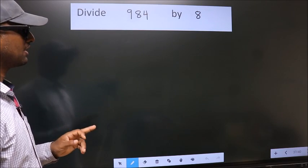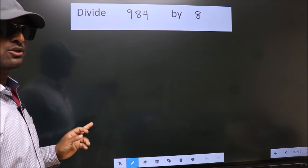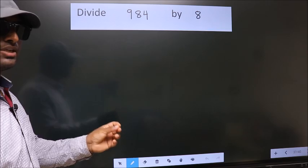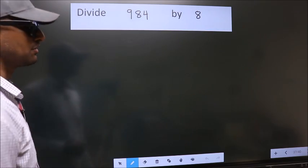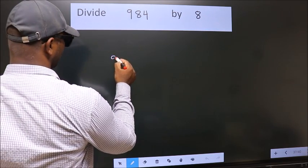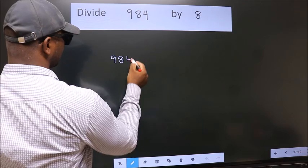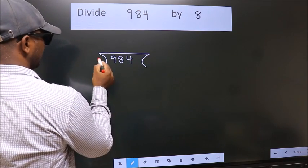Divide 984 by 8. To do this division, we should frame it in this way. 984 here, 8 here.